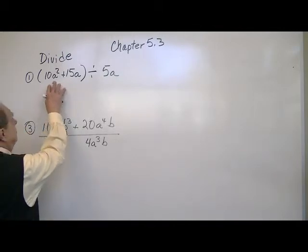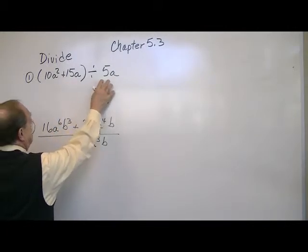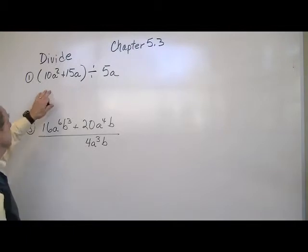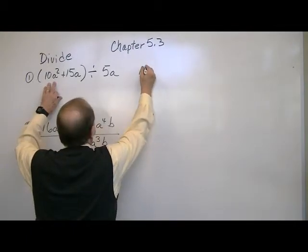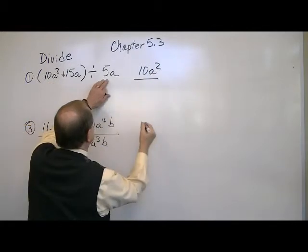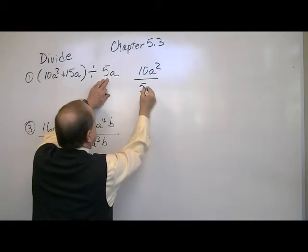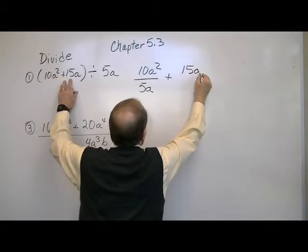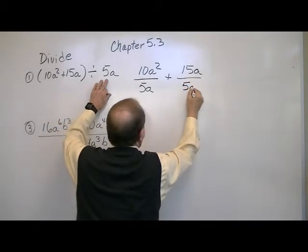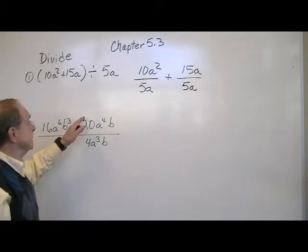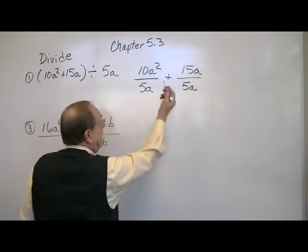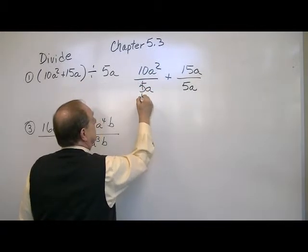So here you have a binomial that you're going to divide by a monomial. What's the technique there? Well the technique is to take each of these terms and divide it by your monomial. So the key is this is how you set it up and then you do your division, canceling out basically.